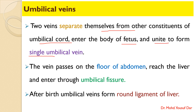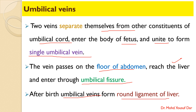When they enter into the body, they unite together and form a single umbilical vein. The umbilical vein then passes on the floor of the abdomen and reaches the liver. As soon as the umbilical vein reaches the liver, it enters through the umbilical fissure. After birth, when the umbilical cord is severed, the umbilical veins get converted into the round ligaments of the liver.